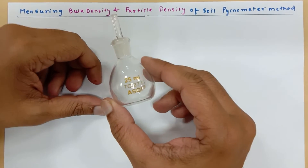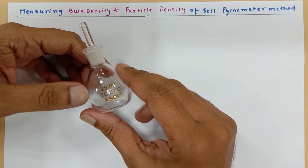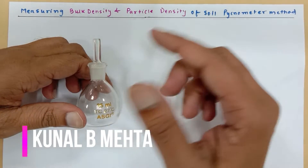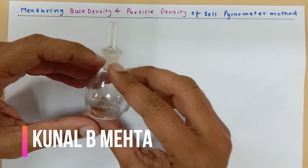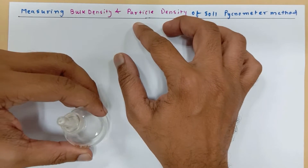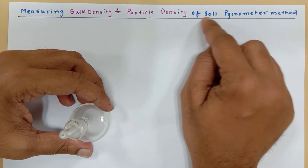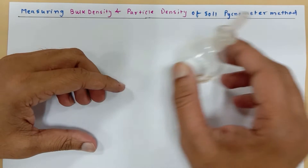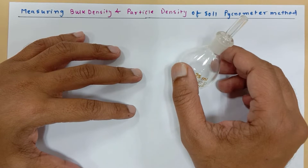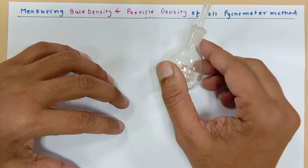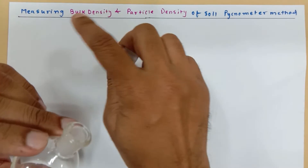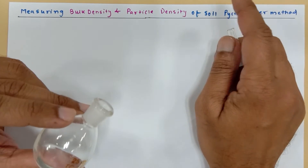Today I'm going to take up a very important topic that belongs to soil engineering. This may be a very good discussion for grade 9 to 12 students. Let us try to understand bulk density and particle density of the soil with the help of the pycnometer method. Here is a pycnometer, and in this pycnometer there is a stopper. I am going to measure the bulk and particle density of the soil theoretically.